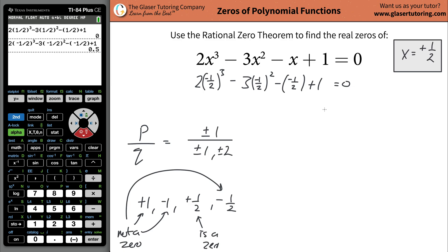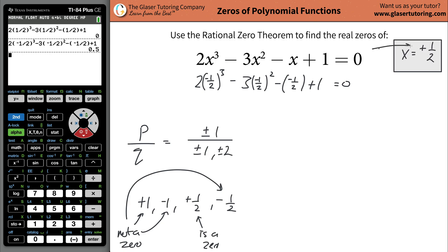At this stage, we know for certain we have one real zero at positive one half. We also know there's a rational zero at positive one half. But we don't know if there are some irrational zeros as well. There are three zeros — whether they're all real, all imaginary, rational or irrational depends on how the math works out. If you don't have a calculator, what you would do now is a synthetic division.